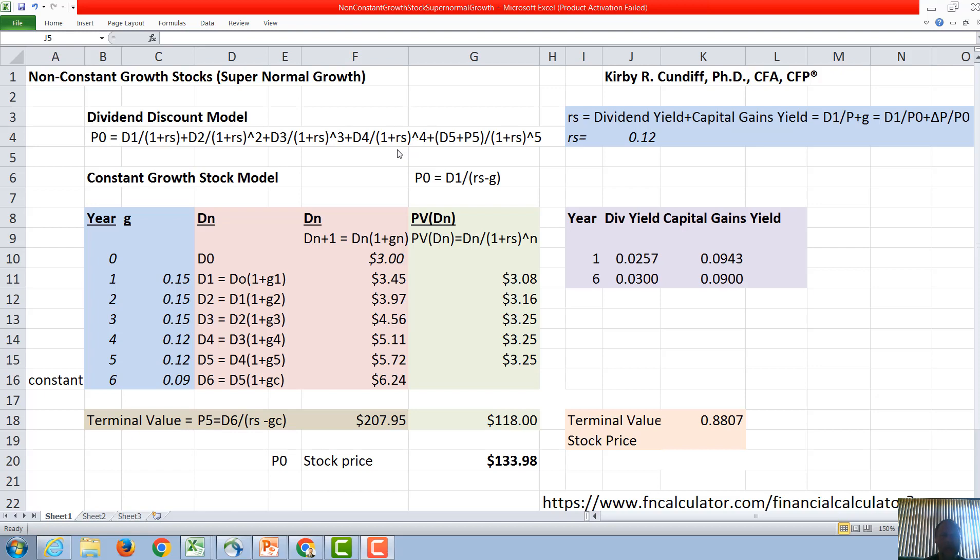Under the very limited case where we get a constant growth of the dividend such that D1 is (1+G constant) times D0 and each dividend increases each year only by a constant growth rate, this is a converging infinite series and we get the constant growth stock model of P0 = D1/(rs - g).